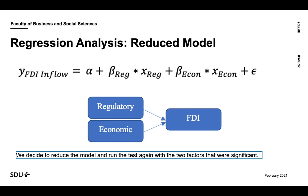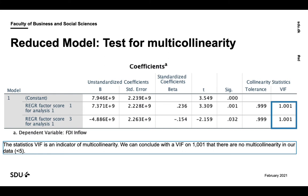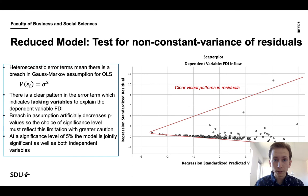We removed factor 2 because it was not significant and we ran the test again with the two significant variables. In the new model summary, we see that the R-squared value still is 0.082 but the adjusted R-squared value increased to 0.072. So still the two independent variables explain 8.2% of the FDI inflow. In the new ANOVA, we have a p-value of 0 which again confirms that there is a significant correlation between the dependent and independent variables. To check for multicollinearity, we looked at the VIF statistics and saw a value of 1.001 for both, which is lower than the critical value of 5 and we can therefore conclude there is no multicollinearity in the data.